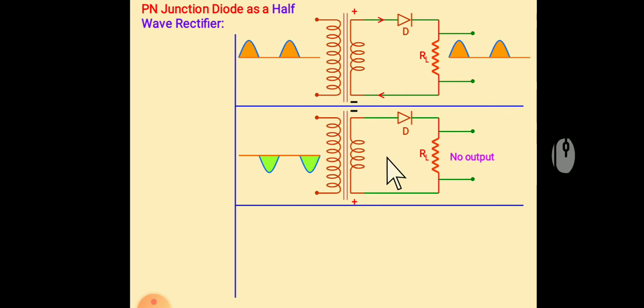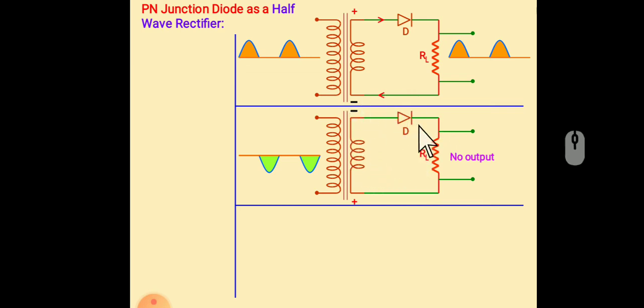So we will not get the output because negative terminal is connected to P type, so it is reverse bias. As in the reverse bias, there is no current in the output.